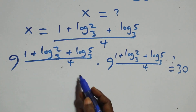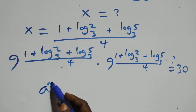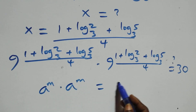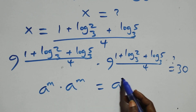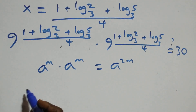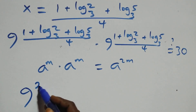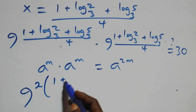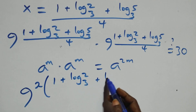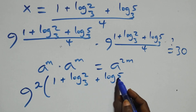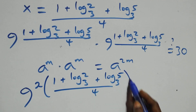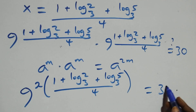Applying the rule for same-base multiplication — a^m times a^m equals a^(m+m) = a^(2m) — this becomes 9 raised to power 2 times (1 + log₃2 + log₃5) / 4, which equals 9 raised to power (1 + log₃2 + log₃5) / 2, equals 30.